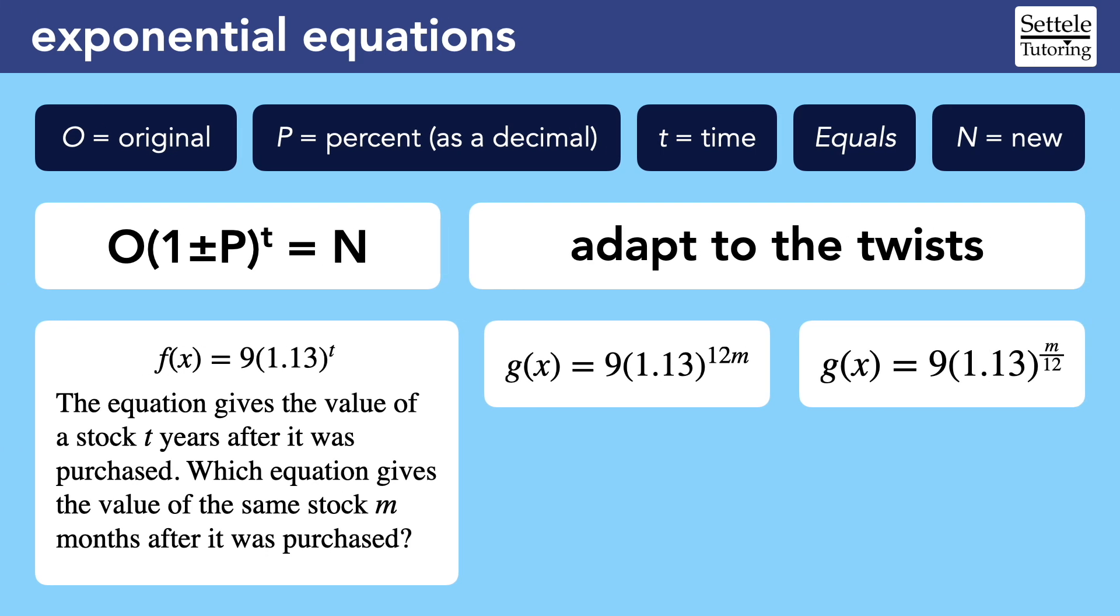Here's another situation where our intuition shouldn't be trusted. Here we have an exponential equation that looks a lot like the open formula. We're told that this equation gives the value of a stock t years after it was purchased. Which equation gives the value of the same stock m months after it was purchased? For simplicity, I only gave you the two choices that matter. Which one feels more right?